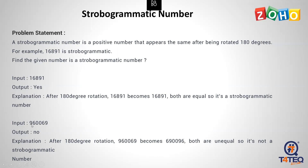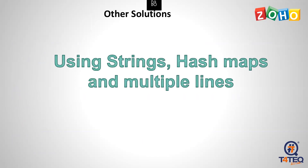If you look at the same number, this is the Strobogrammatic Number. To rotate the number, it's 9, 6, 0, 0, 6, 9 — if you rotate the number, it's the same number. So, this is not a Strobogrammatic Number. If you want to check this out, you can use strings.